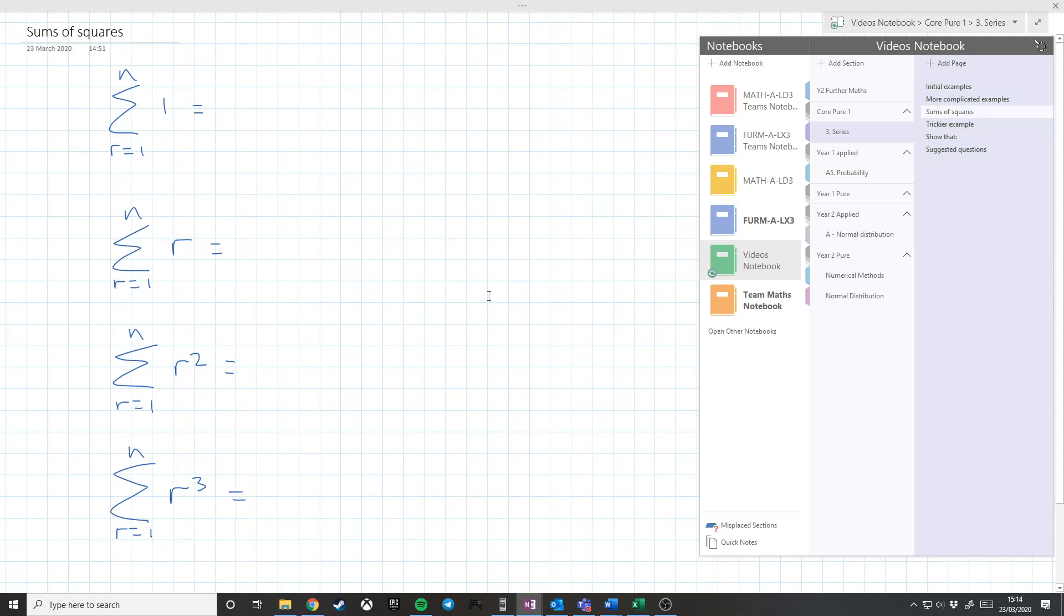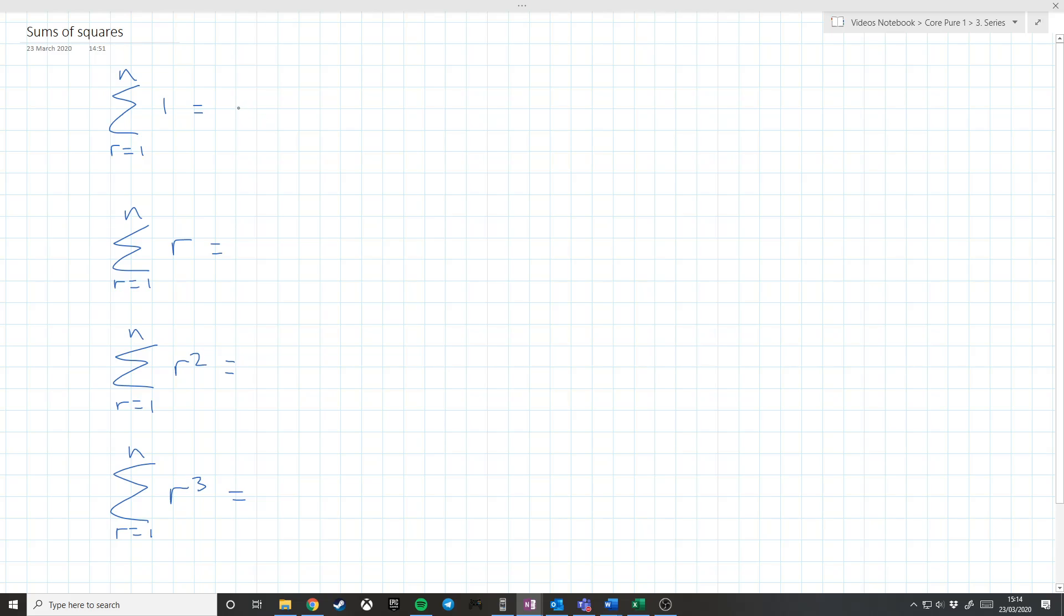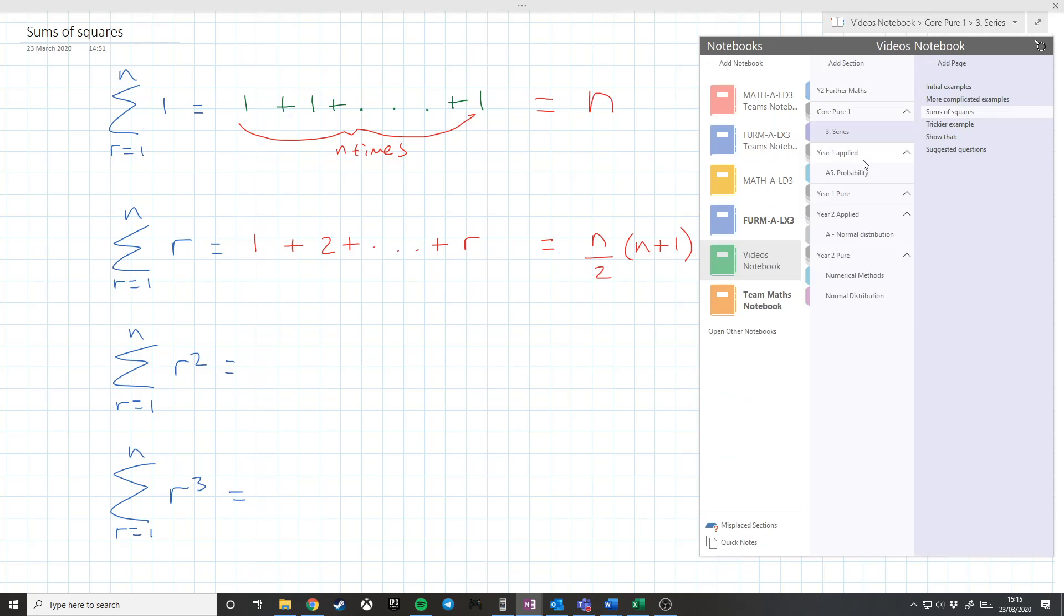So I'm actually going to skip on to fill in the first two of our formulas. We're going to come to these two later. The sum from r equals 1 to n of 1 is 1 plus 1 plus, and we add these up, plus 1. We have got n of those, and so this is equal to n. And the sum from 1 to n is 1 plus 2 plus dot dot dot up to r. And this is equal to n over 2, n plus 1. And I'm going to say immediately that you have to remember these. They're not in the formula book.